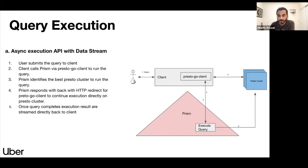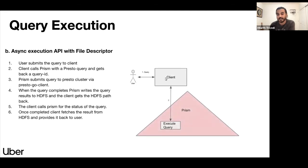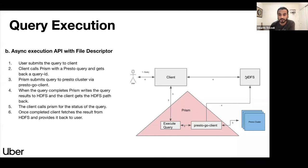The second approach is using the file descriptor mode. So in this mode user is submitting the query to the client. The client is then forwarding the query to Prism. Prism has Presto go client and using which it is talking to the chosen Presto cluster. Once the query completes, Prism is going to write the result of the query into HDFS. After the result writing gets over, Prism is going to give the client back the path, HDFS path where the result is stored. The client can now talk to HDFS and retrieve the results from the given path.